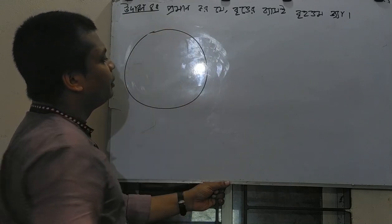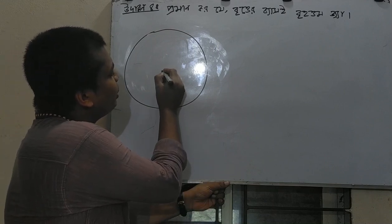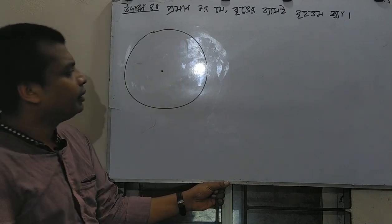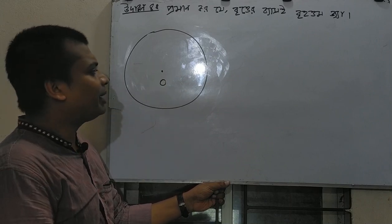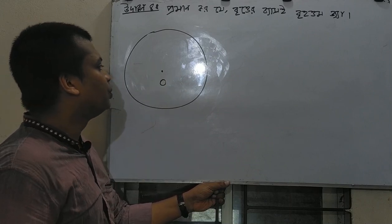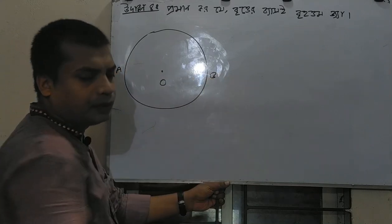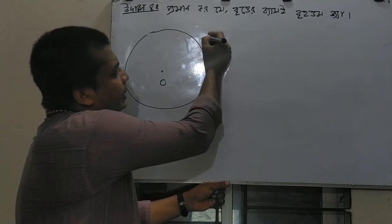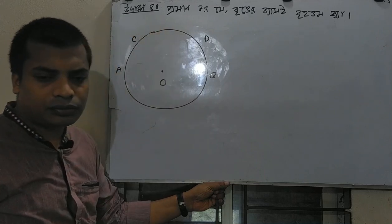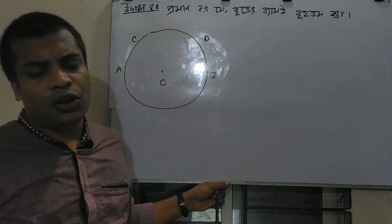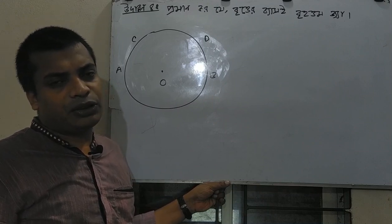We will ask the question. The question is called O. We will ask the question — what is called? ABDC. We will ask the question; the question is important.